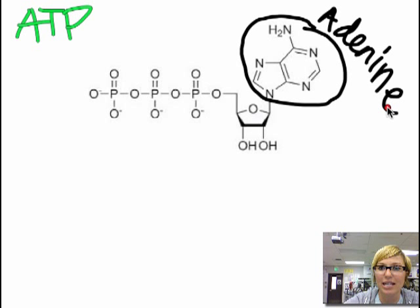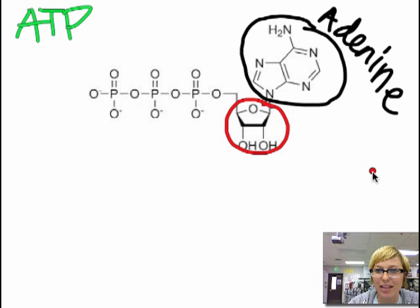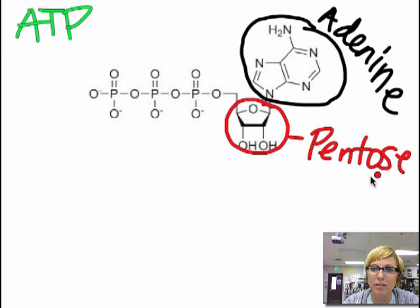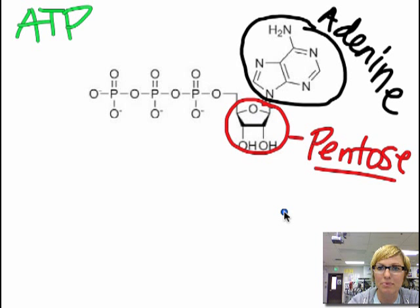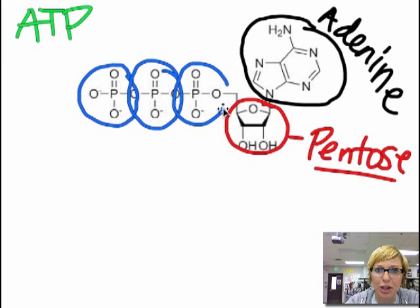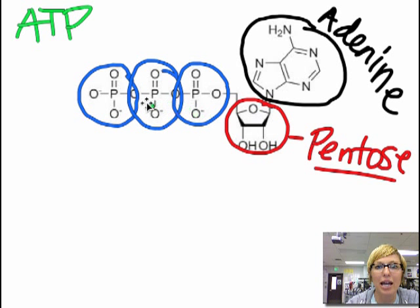We have a purine and it is attached to this thing that looks like a pentagon — you might think, wow, that looks a lot like a five-carbon sugar. Good job, because it is a five-carbon sugar named pentose. We know pentose is a sugar just by looking at its name. And then at the end we have these super awesome phosphate groups, and this is where our energy potential comes from in ATP — not one, not two, but three phosphate groups attached to the adenine and the pentose. In these phosphate groups are super high-energy bonds, and when these bonds are broken it releases energy.